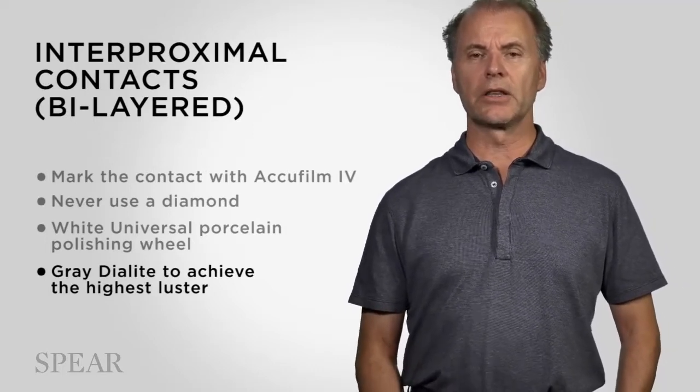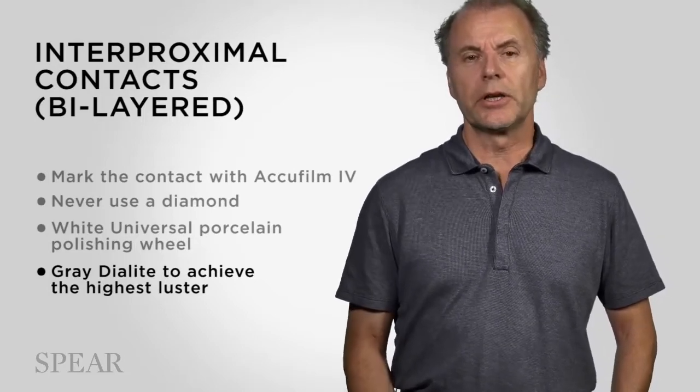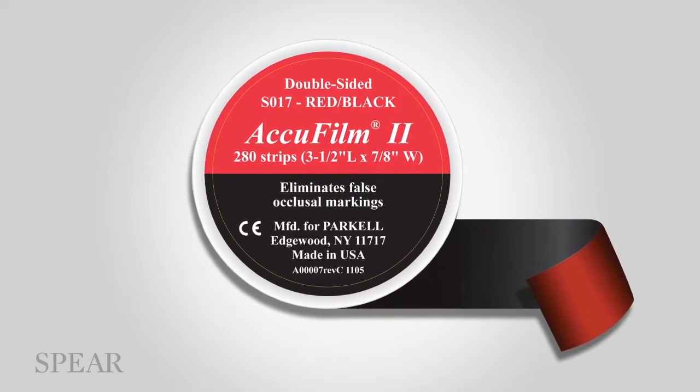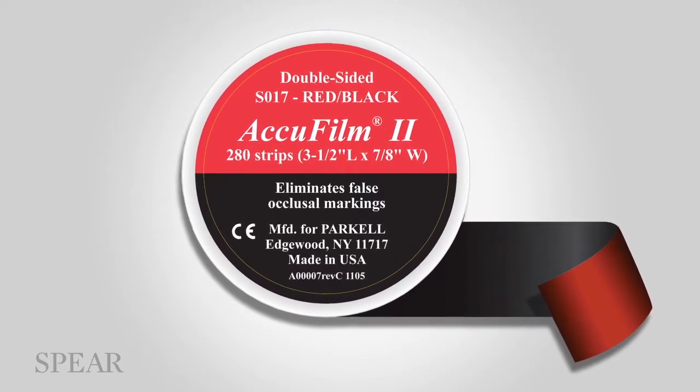I'm going to be referring to various wheels that I use within their system. And I achieve the high shine with a gray dialyte to achieve the highest luster. First marking the interproximal contact. We typically would use articulating paper. AccuFilm 2 is the one that I would use because it's extremely thin.